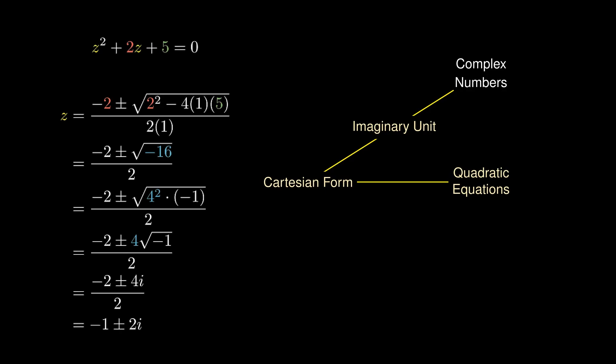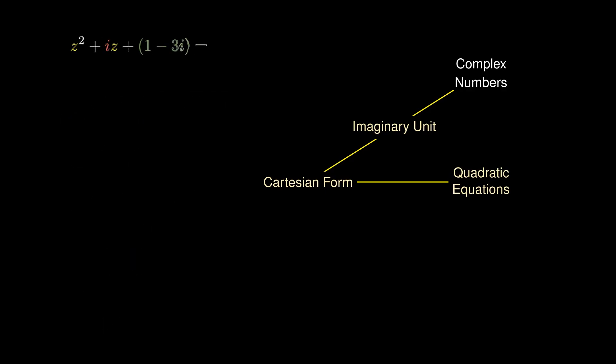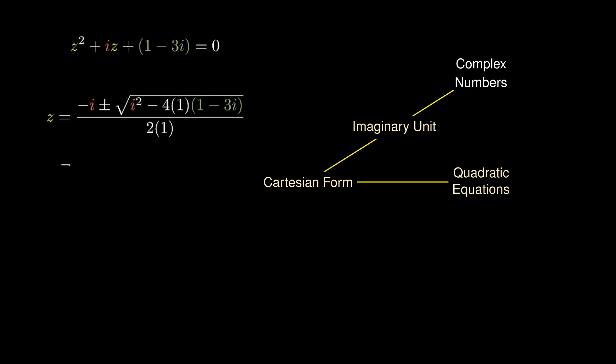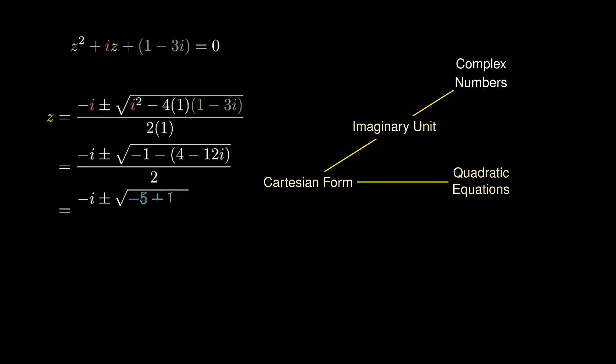Here's another quadratic equation: z² + iz + 1 - 3i = 0. Applying the quadratic formula and simplifying some of the terms, we are stuck because we don't know what the square root of -5 + 12i is.